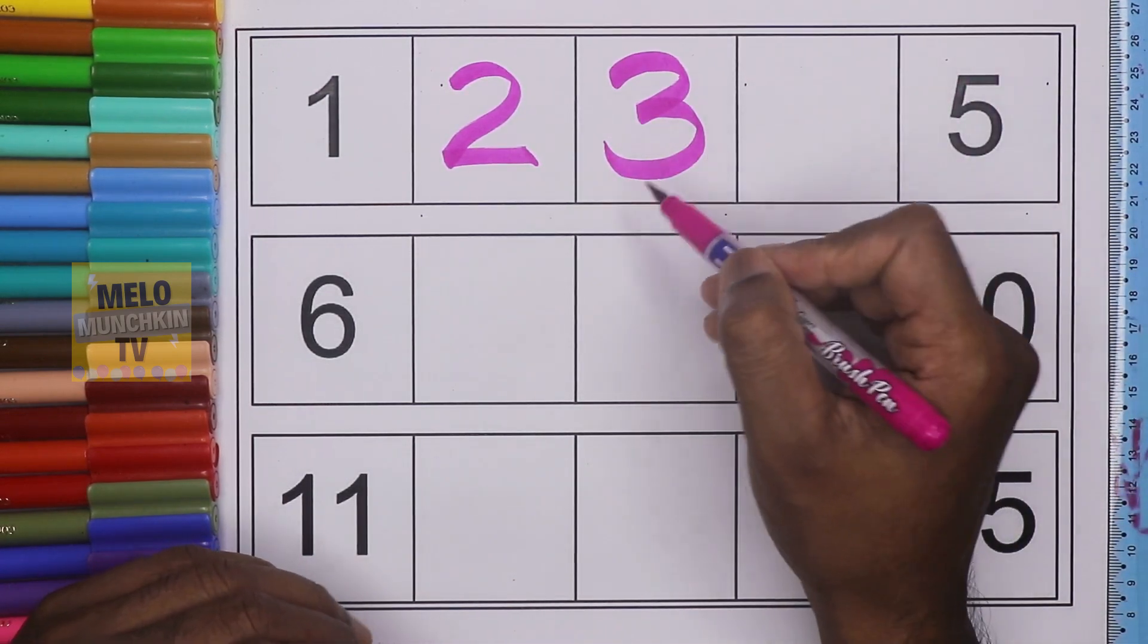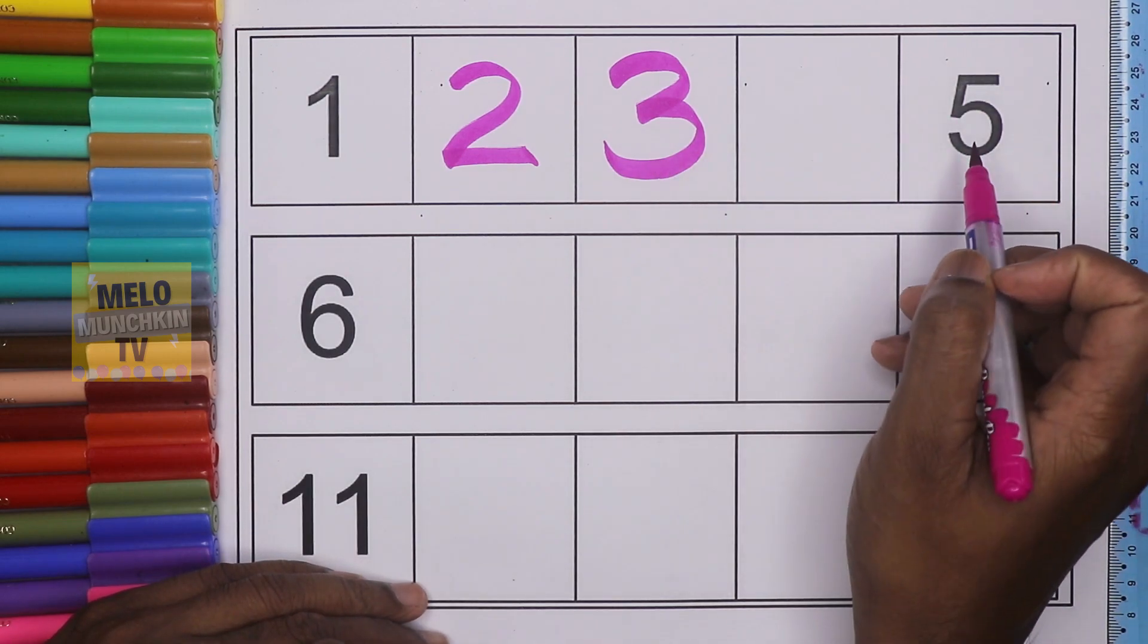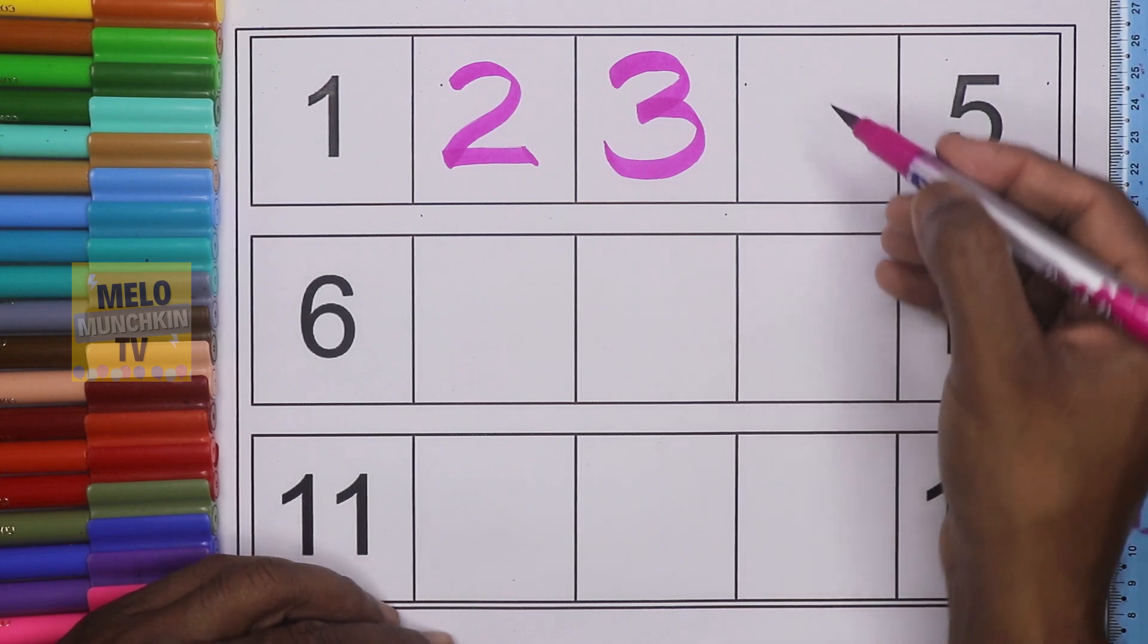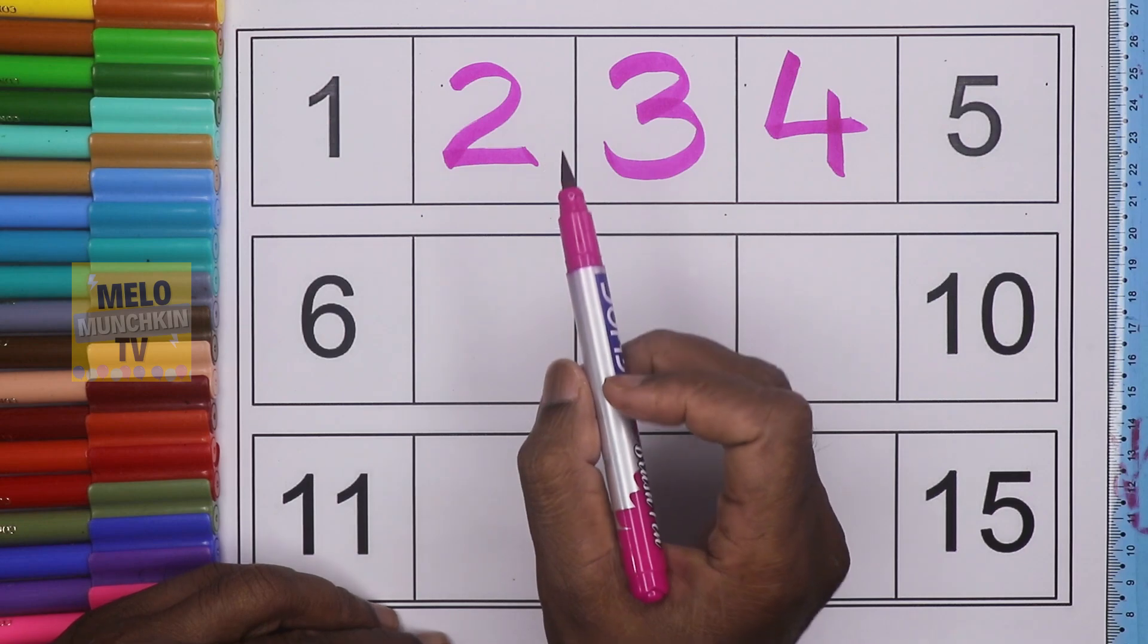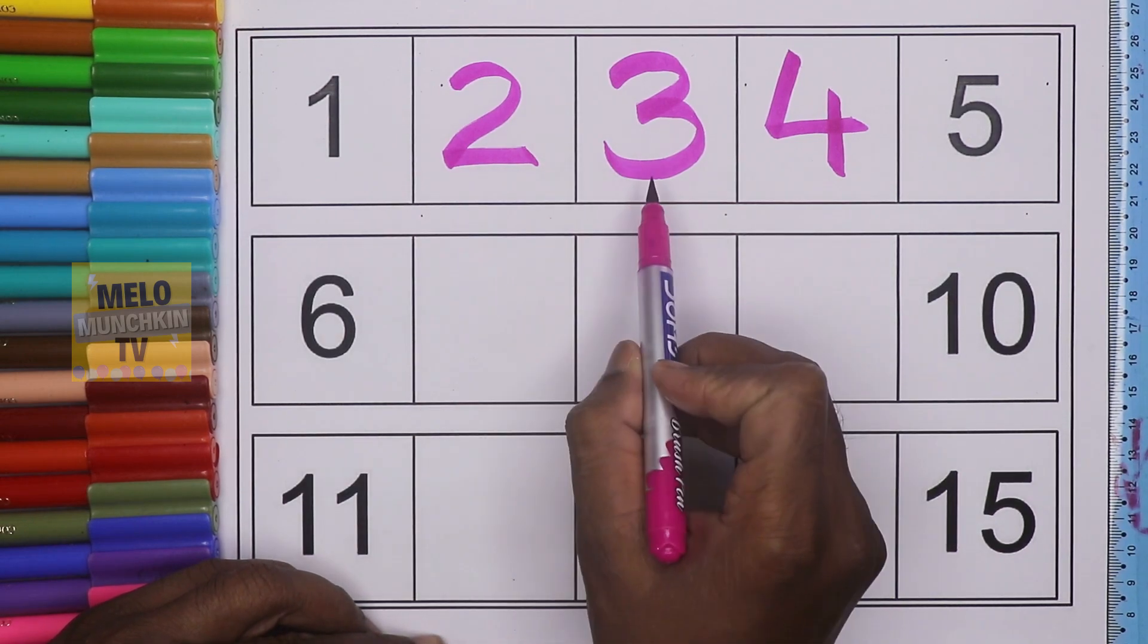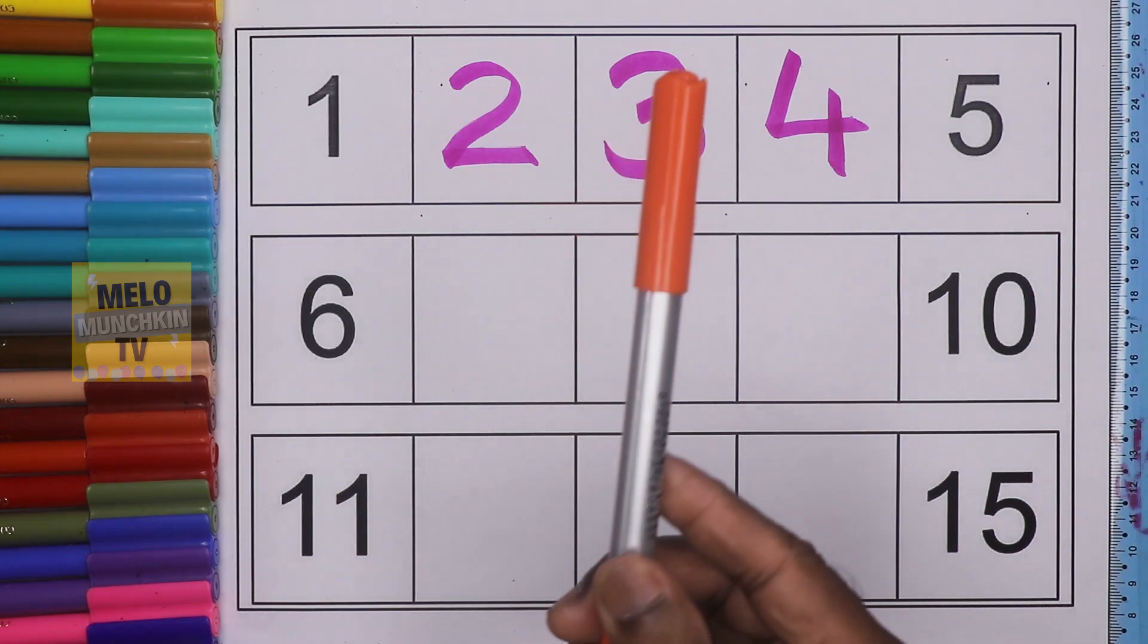After 3 and before 5, what comes? It is number 4. So we have our missing numbers: 2, 3, and 4. Let's come to the second line with orange color.